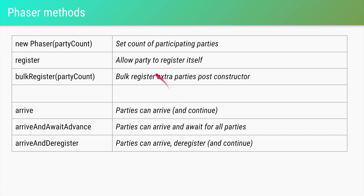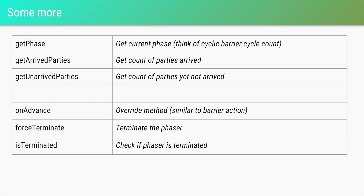To recap the Phaser methods: for registration you can use the constructor, register(), or bulkRegister(). To behave like a CountDownLatch use arrive(), which is similar to countDown(). To behave like a CyclicBarrier use arriveAndAwaitAdvance(), similar to barrier.await(). To dynamically deregister use arriveAndDeregister(). Additionally, getPhase() returns the current phase count — useful when using Phaser as a CyclicBarrier to know which cycle you are on.